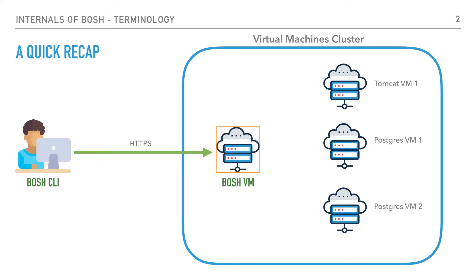Before we dig deeper, let's do a quick recap of how to think about BOSH. As we have mentioned before, let's imagine it as a black box VM that somebody created for us. This black box VM has a process running on it that we interact with using a command line tool we call the BOSH CLI. Then we tell BOSH somehow to create a few VMs and to deploy our software on them.